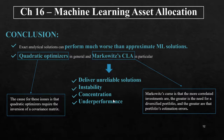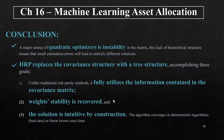As a conclusion, exact analytical solutions can perform much worse than approximate machine learning solutions. Although mathematically correct, quadratic optimizers in general and Markowitz's CLA in particular are known to deliver generally unreliable solutions due to their instability, concentration, and underperformance. The root cause is that quadratic optimizers require the inversion of a covariance matrix. Markowitz's curse is that the more correlated investments are, the greater the need to diversify the portfolio, and yet the greater are the portfolio's estimation errors. With so many edges connecting the nodes of the graph, weights are allowed to rebalance with complete freedom, and this lack of hierarchical structure means that small estimation errors will lead to entirely different solutions.